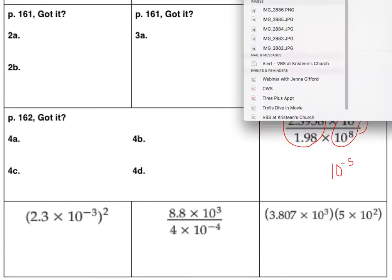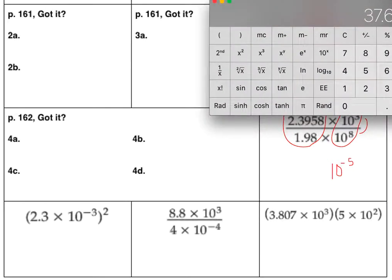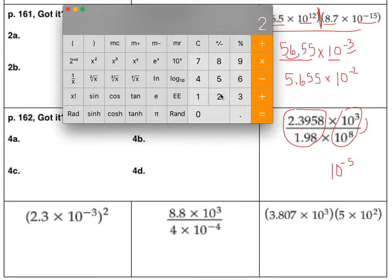3 minus 8 is negative 5. And if I take on my calculator, 2.3958 divided by 1.98, we get 1.21.